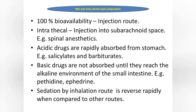Acidic drugs are rapidly absorbed from the stomach — for example, salicylates and barbiturates. Basic drugs are not absorbed until they reach the alkaline environment of the small intestine — for example, pethidine and ephedrine. In short: acidic drugs are absorbed rapidly from the stomach, basic drugs from the small intestine. Sedation by inhalation route is reversed rapidly compared to other routes.